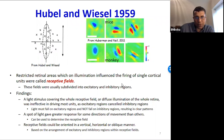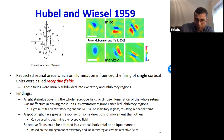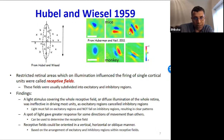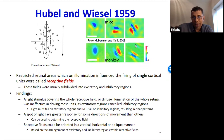They started with dots and moved them around, finding the neuron responded only when dots moved in specific orientations. Mapping it out, the receptive fields they found for different neurons show that the excitatory region (blue) and inhibitory regions (red) form linear patterns — horizontal, vertical, or at an angle. This was found not just for cats but also for mice and monkeys in later experiments.